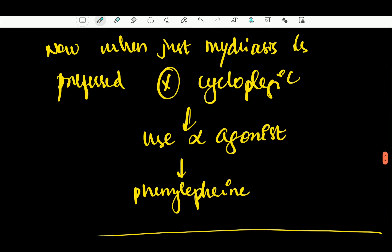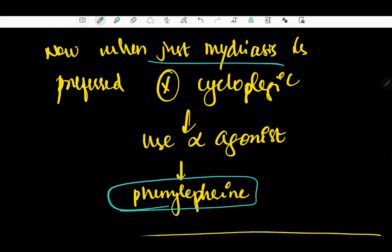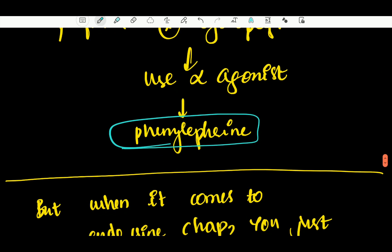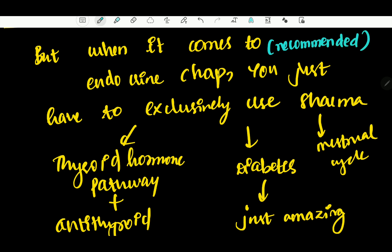If you go to a fundus examination, use an alpha agonist — use phenylephrine, and it gives you an explanation. In other topics, in the endocrine chapter, you have full insight about thyroid disease, physiology, metabolism, and thyroid hormones.